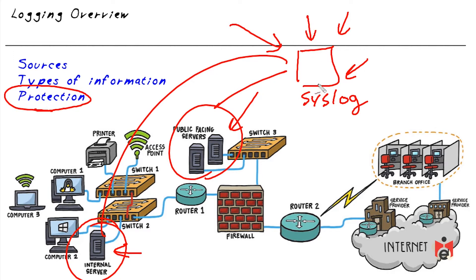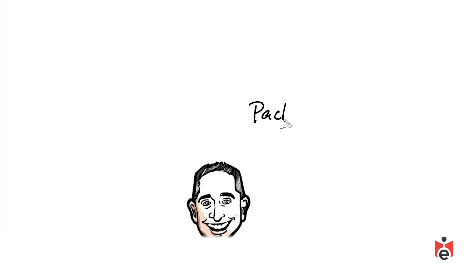The person administering the servers should not be the same person who has access to manipulate files on the syslog server. Maybe Bob is the administrator and Lois is the manager/administrator of the syslog server itself. Based on human behavior, if Bob knows everything he does is being logged to a server he cannot access, he's very likely going to be more accountable for his actions.